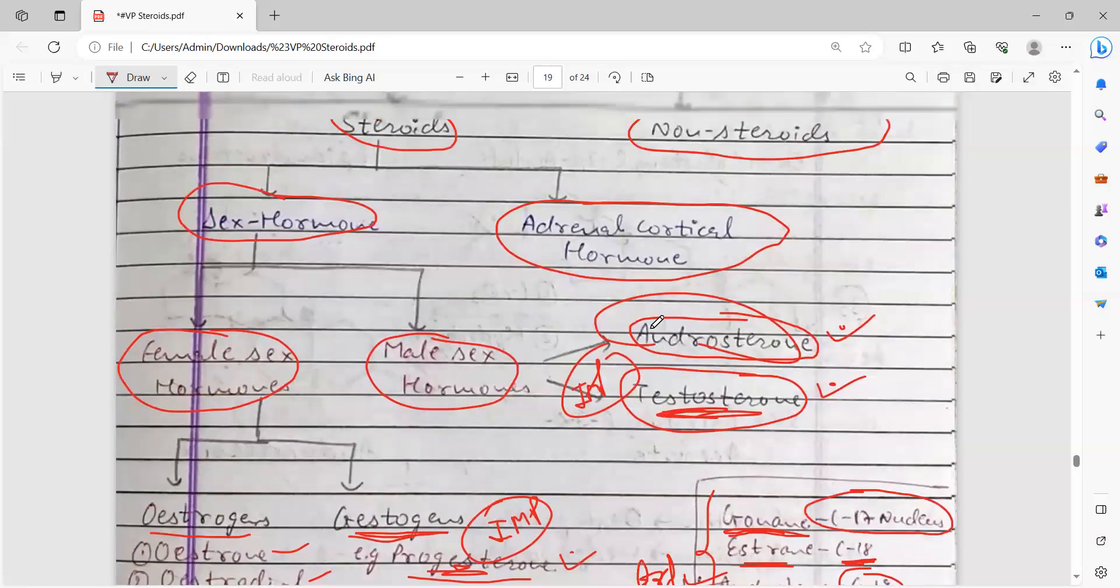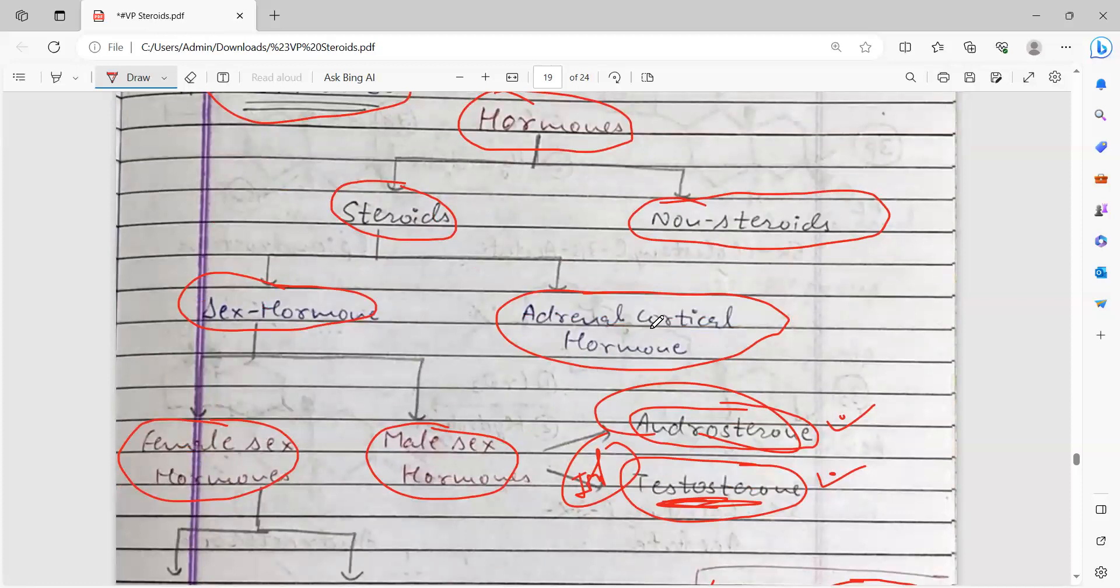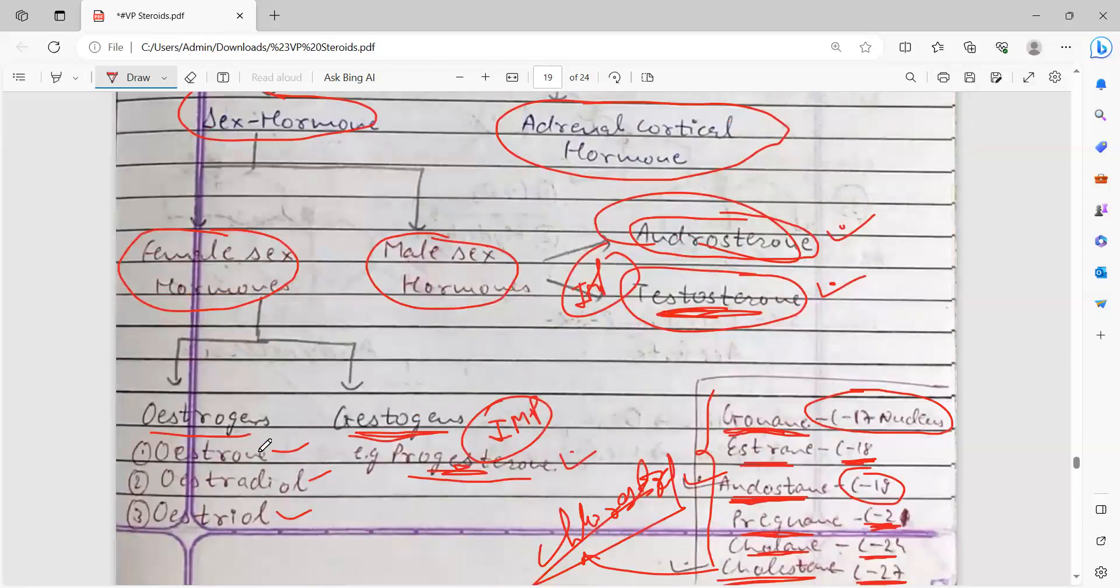Now, let us look at the classification of hormones. Next lecture, we will discuss the synthesis pathway of different hormones: androstenedione, testosterone, progesterone, and estradiol. This is the next lecture.